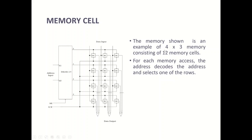This is an example of a 4×3 memory. We have 12 memory cells. The construction of memory is written as 4×3, where 4 refers to the number of locations in memory, and 3 refers to how many bits can be stored in one location. Each memory cell can store one bit. For each memory access, we have an address that decodes the location and selects one of the rows to store the bit.